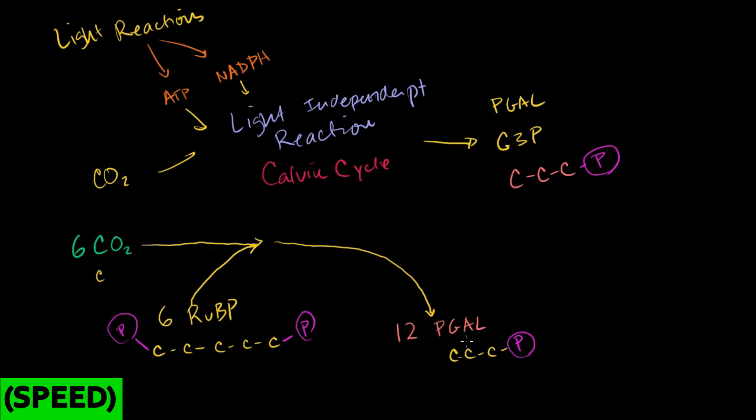Now, the bonds, or the electrons in this molecule are in a higher energy state than the electrons in this molecule, so we have to add energy in order for this reaction to happen. This won't happen spontaneously. And the energy for this reaction, if we use the numbers 6 and 6 here, the energy for this reaction is going to come from 12 ATPs.